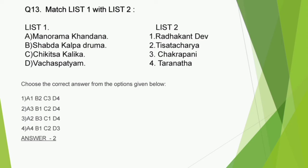Question number 13 is also a match the following type question. List 1 has 4 books to be matched with their authors. A - Manoramakhandana is written by Chakrapani. B - Shabdakalpadruma is written by Radhakantadeva. C - Chikitsakalika is by Tisatacharya. And D - Vachaspatyam by Taranath. The correct answer is option 2.